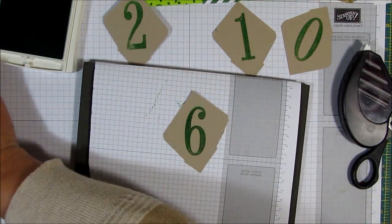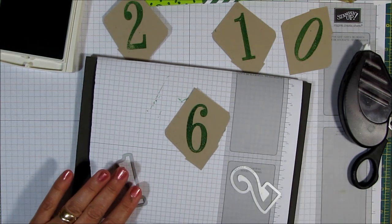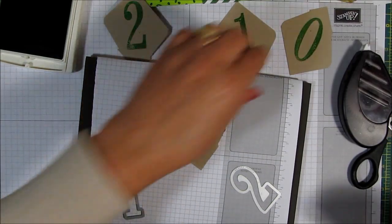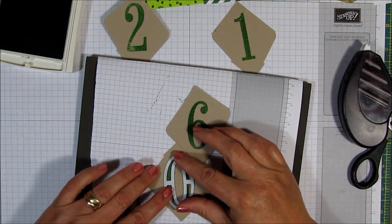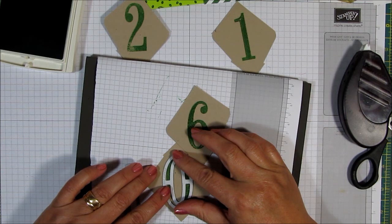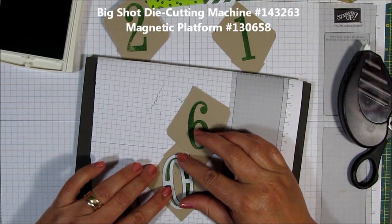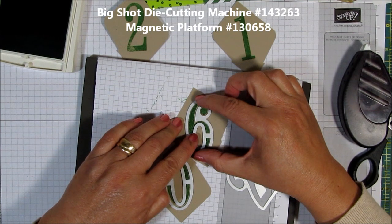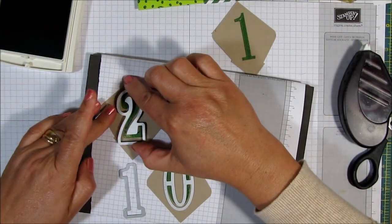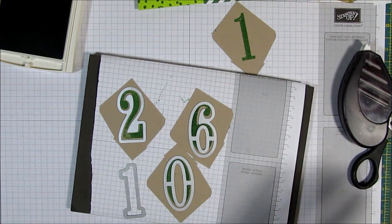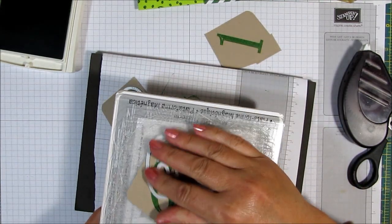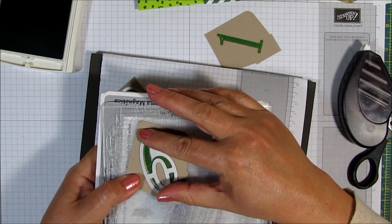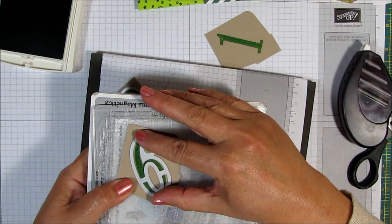There we go. And so what I'm going to do is I'm going to take the framelits from the number, the large numbers framelits dies. I'm going to take those. And I am going to just go ahead and cut them out on my Big Shot. I'm going to be using my magnetic platform for this. I won't bring the Big Shot in because it's so big and bulky. I don't have a lot of room in my film area for it. So, basically that's what I'm going to do, putting it on the magnetic platform. See, this is the magnetic platform here. And this is one of the plates, my very well-loved plates. And that's what I'll do. I'm just going to go ahead and cut them all out and I will be right back.